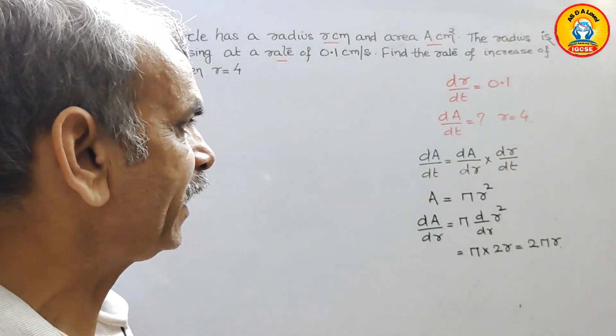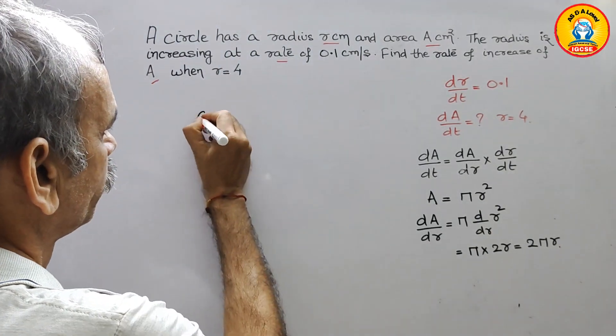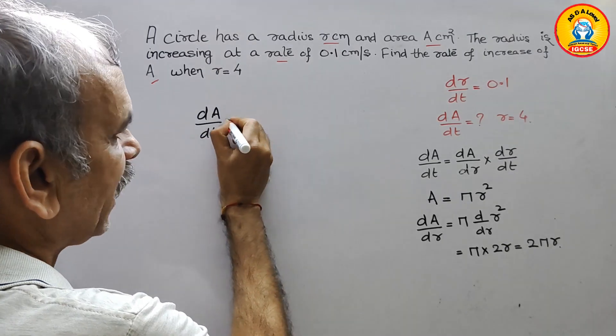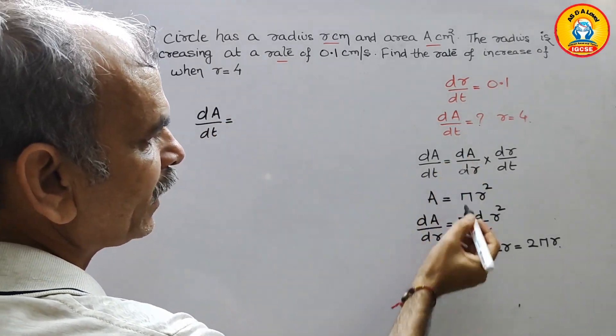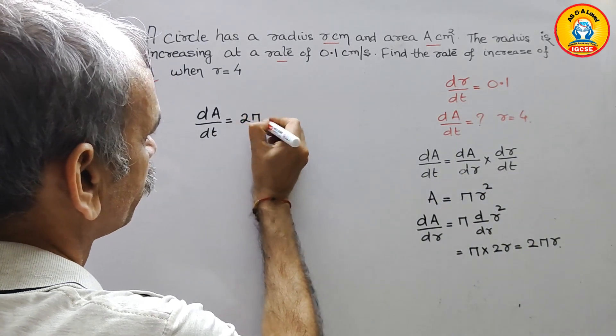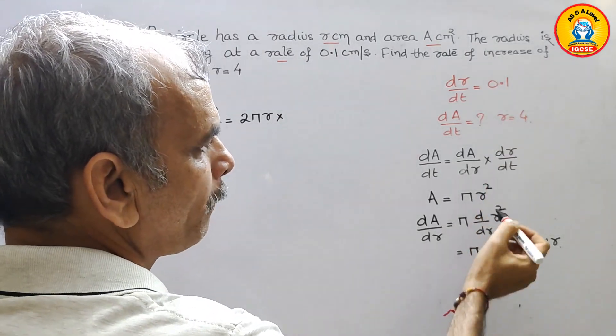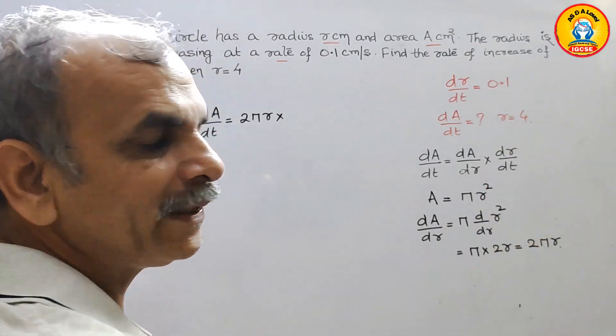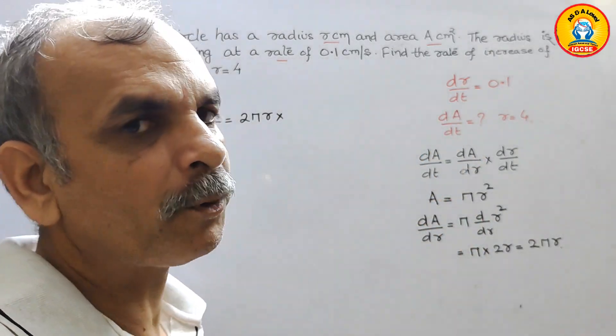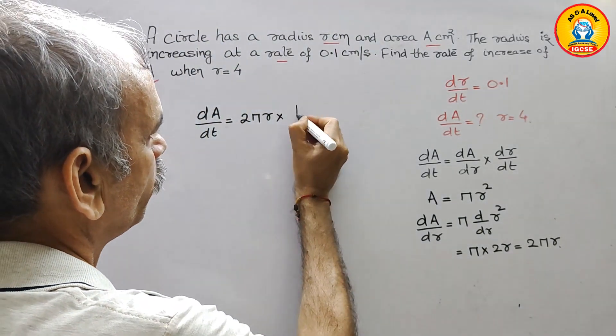So now you will get dA by dt. That is equal to dA by dr is 2 pi r into next comes your dr by dt. That is 0.1. We will write 0.1 as 1 by 10.